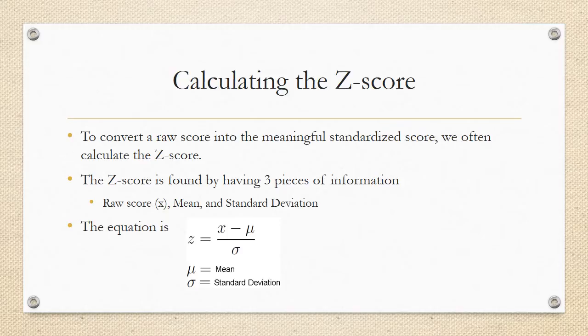Calculating the z-score. So to convert the raw score into that meaningful standardized score, we need to calculate the z-score. We need to have three pieces of information to do this. Obviously, you need the raw score. You need the mean and the standard deviation. And then there's an equation to follow. The z-score is equal to z = (x - μ) / σ, where x is the raw score minus μ the mean divided by σ the standard deviation.